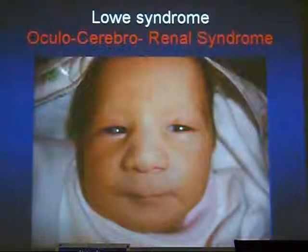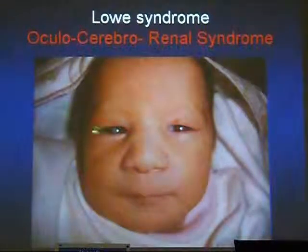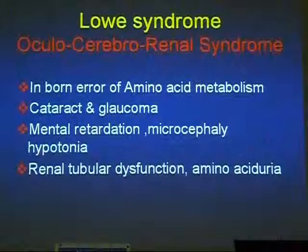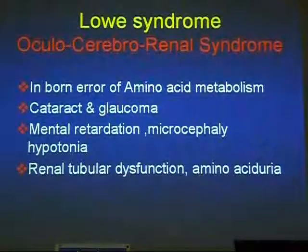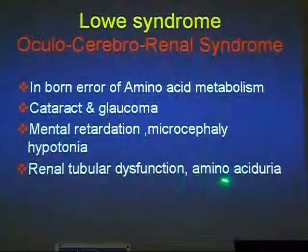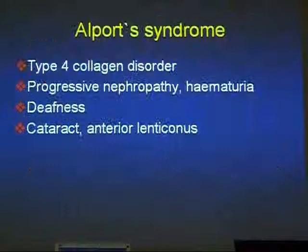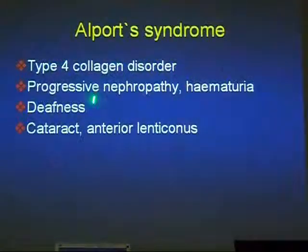Lowe syndrome, called oculocerebrorenal syndrome, usually presents with congenital cataract and congenital glaucoma, with microcephaly and mental retardation. It is an inborn error of amino acid metabolism presenting with aminoaciduria. Alport syndrome is a type IV collagen disorder with affection of the kidneys with hematuria together with deafness and cataract. Anterior lenticonus should be suspected when there is marked forward protrusion of the lens — sometimes so severe it is associated with lenticular astigmatism, and surgery may be needed even if the lens is transparent because the high astigmatism cannot be corrected by spectacles.